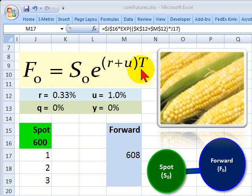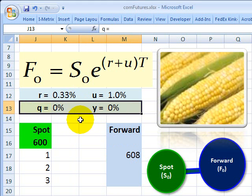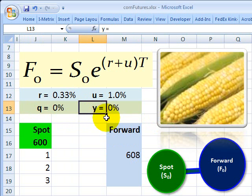Relative to the generic cost of carry model, I'd note that I'm omitting two variables. If you watched a previous tutorial, you know that the generic cost of carry model has fully four variables. I'm not including these two here in the green row. Specifically, I'm not including dividend or income because I'm assuming corn doesn't pay a dividend. I'm also not including Y, the convenience yield.